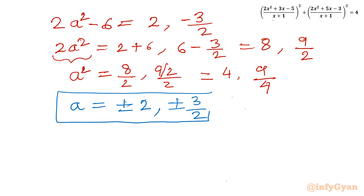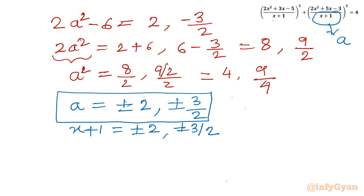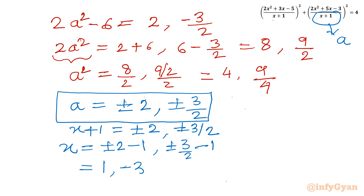Our original substitution was x + 1 = a. So x + 1 = ±2 and x + 1 = ±3/2. Subtracting 1 from both sides: from +2 we get x = 1; from -2 we get x = -3; from +3/2 we get x = 1/2; from -3/2 we get x = -5/2.